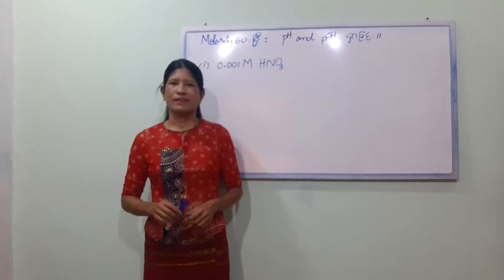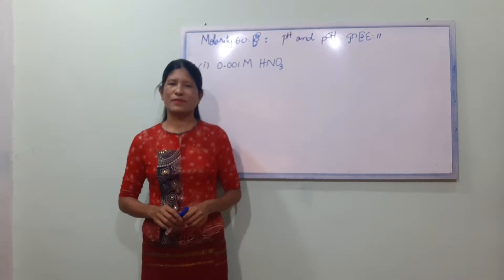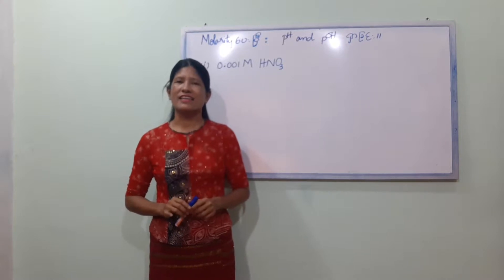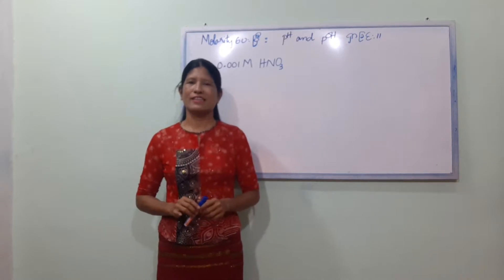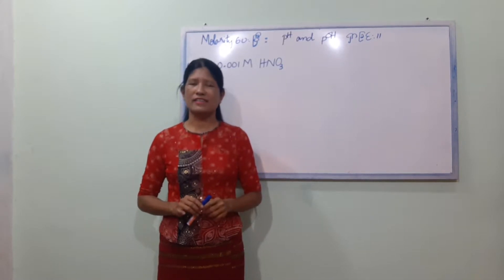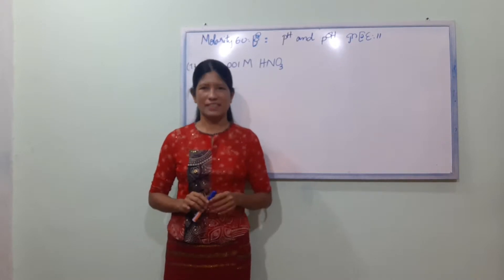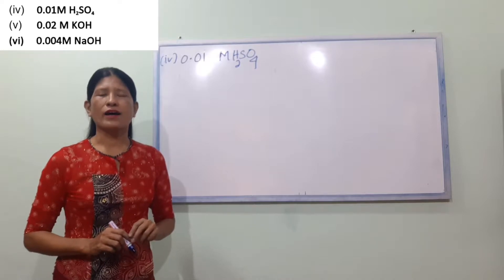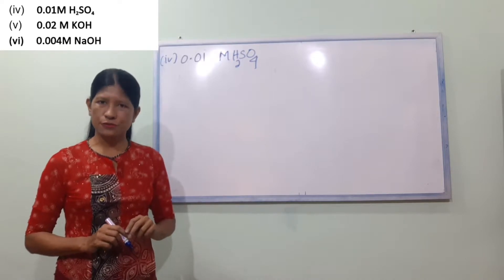Number 1. Number 6. Number 7. Number 8. Number 9. Number 10. So now we have 0.01 mol H2SO4.